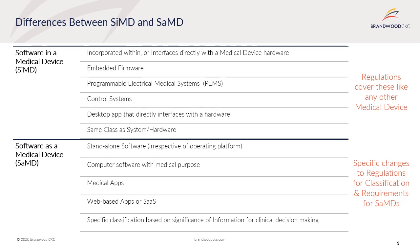Changes in regulations are being made, such as classification and requirements specific for software and medical devices. This is important as the current regulations do not include provisions for software and software as a medical device separate to physical medical devices. Where this poses particular challenges is that the classification rules that exist for medical devices currently only consider the possible harm caused by physical interaction of a medical device with a human. As software does not have this physical interaction, the risks relate more to analysis and calculation errors and inaccuracies in diagnosis and clinical treatment recommendations. Therefore a new specific classification framework is required.